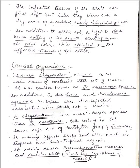Later, the infected tissue of the stalk turns into a dry mass of shredded, easily jointed fibers. In addition to stock rot, a light to dark brown rotting of the sheath occurs, starting from the point where it is attached to the affected tissue of the stalk.